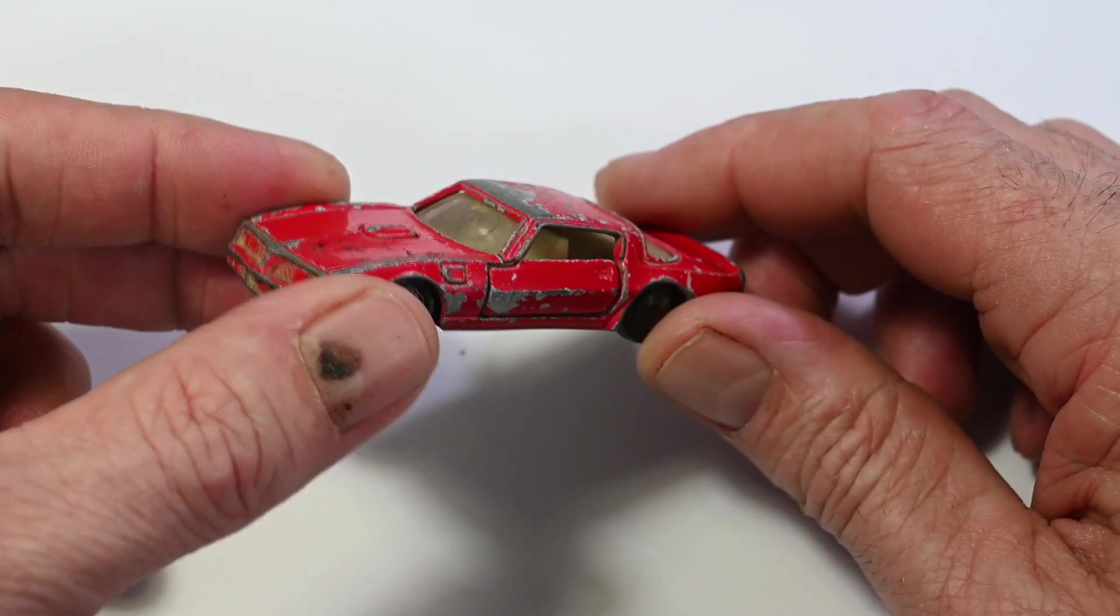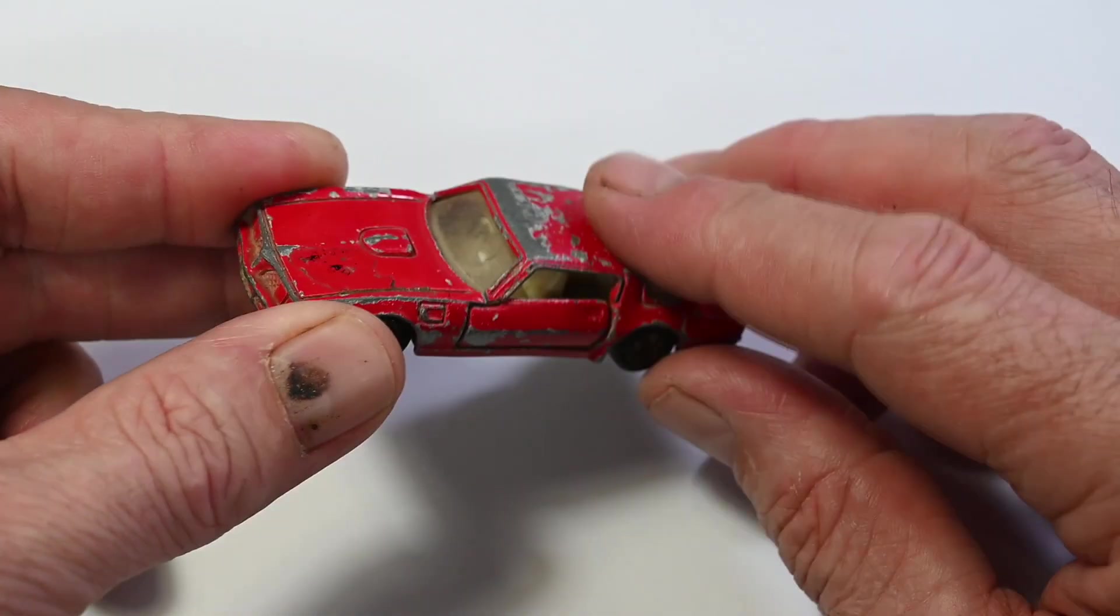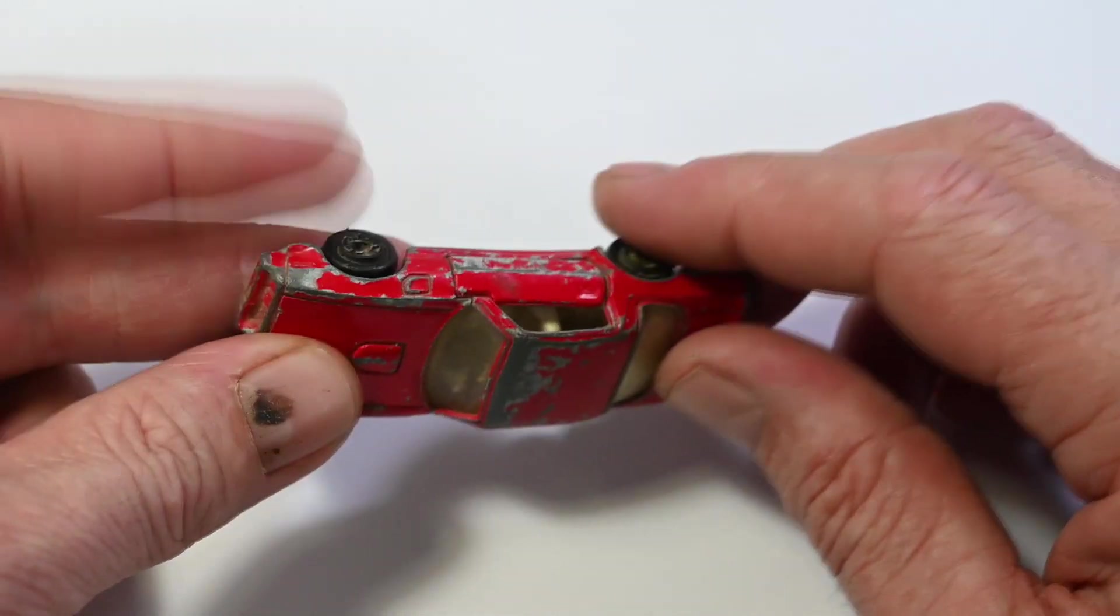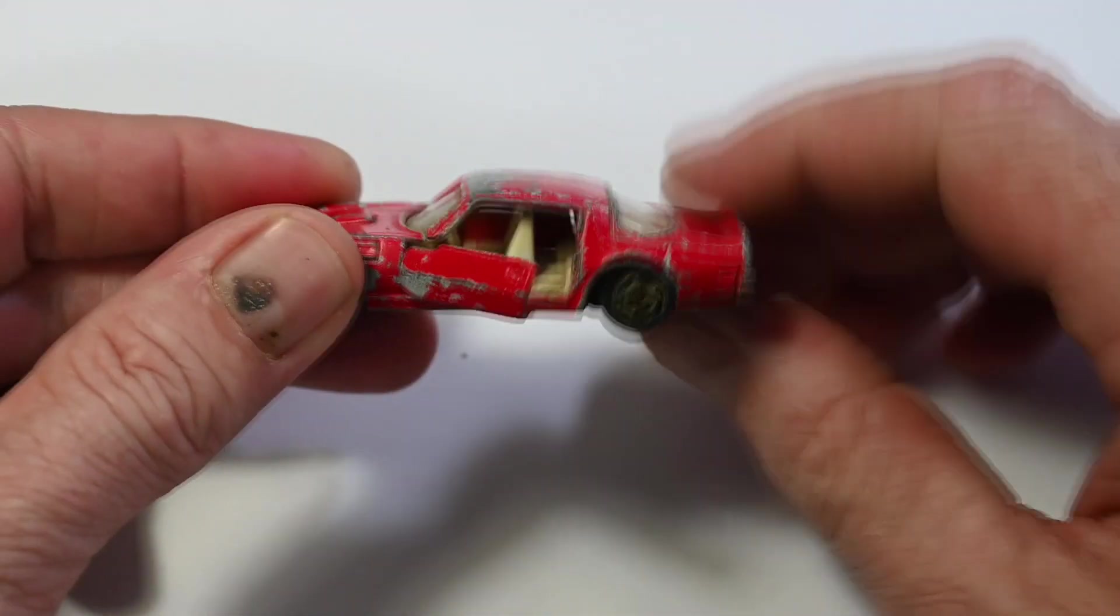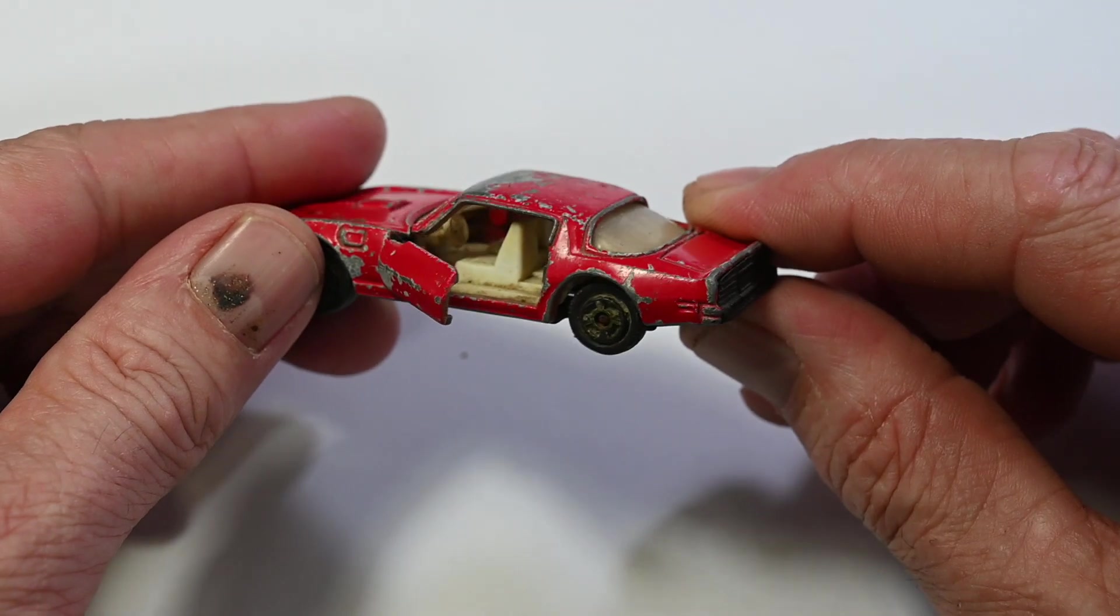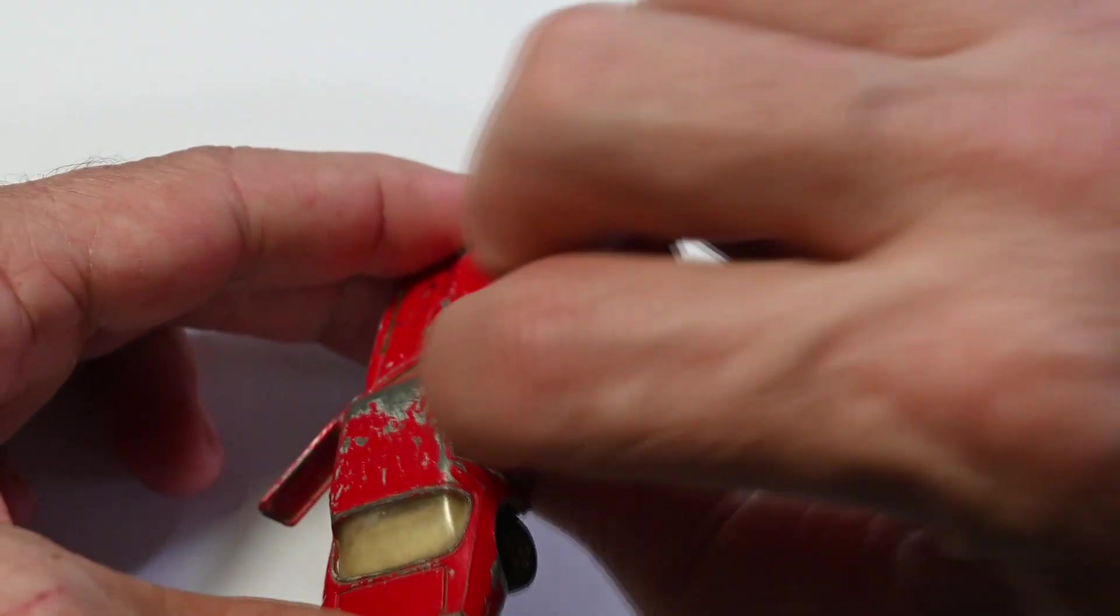So you can see this one's had a bit of a life. Missing plenty of paint there. Both of the front pillars are broken. The base, it's got opening doors they still work alright.